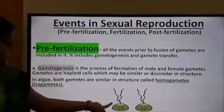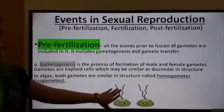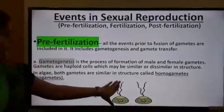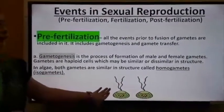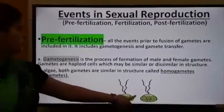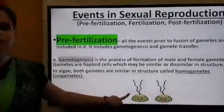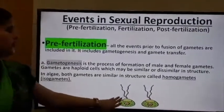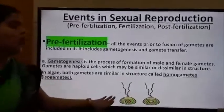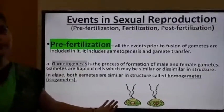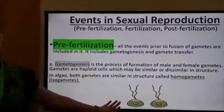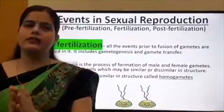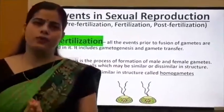In the diagram of algae, both gametes are simple and similar in structure — that is why they are called homogametes. Homogametes are gametes which are similar in structure.